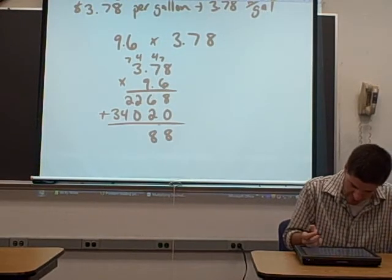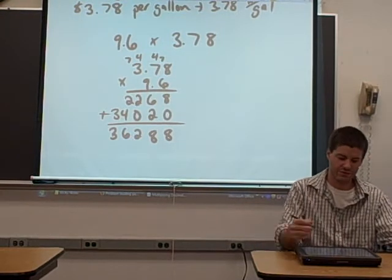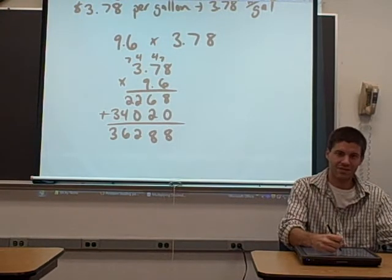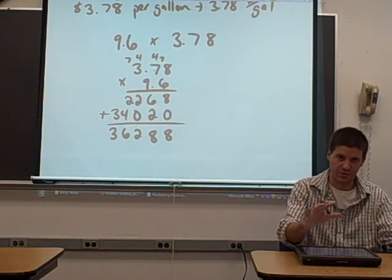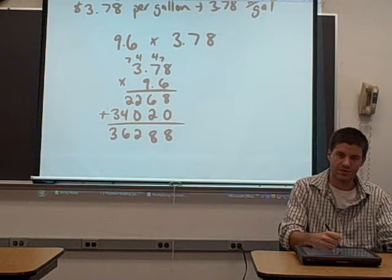To finish the multiplication, we just add those two numbers up. 6 plus 2 is 8, 2 plus 0, 2 plus 4. Okay, so what we have so far, 378 times 96, ignoring the decimals, is 36,288.